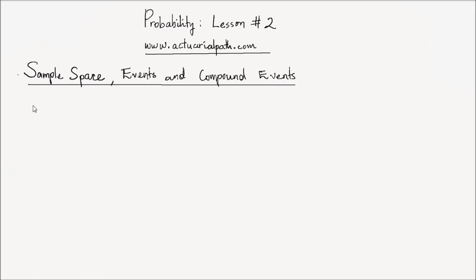Welcome to the second lesson on probability from actuarialpath.com. In this lesson, we will learn about sample space, events, and compound events. In lecture number one, we learned about basic tools in set theory, and in this lecture, we will extend those tools.